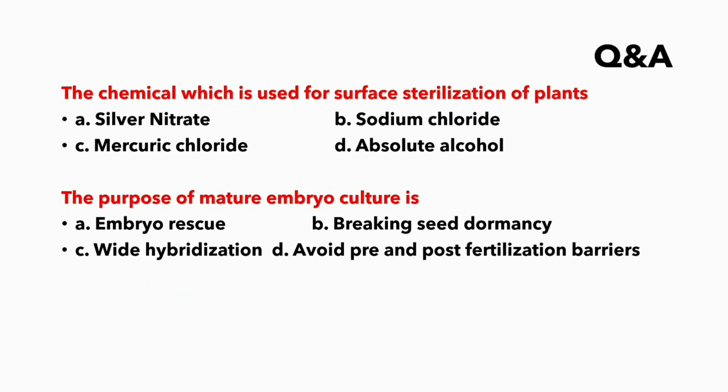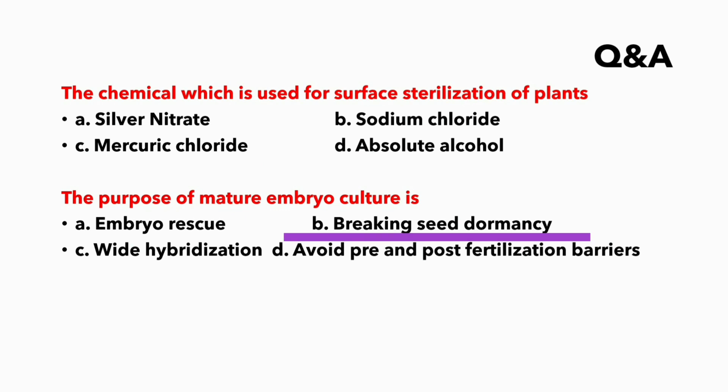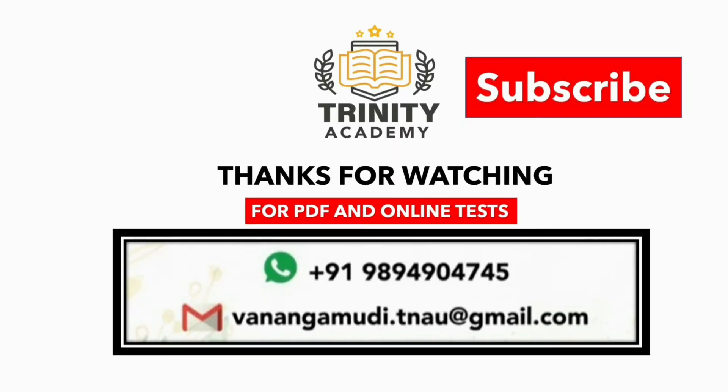The chemical used for surface sterilization of plants is mercury chloride. The purpose of mature embryo culture is breaking seed dormancy. Friends, you may contact through these two communication ways to get the PDF material and online tests.